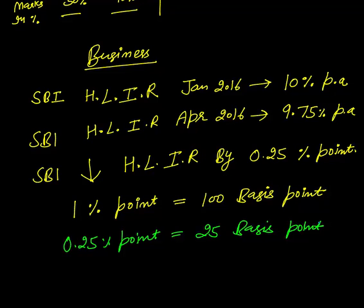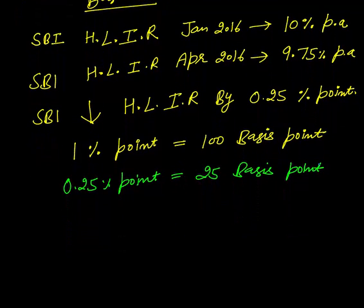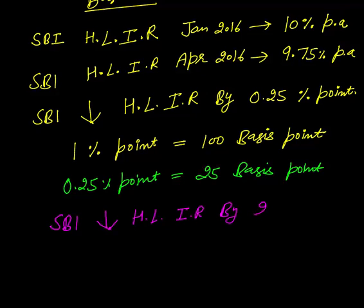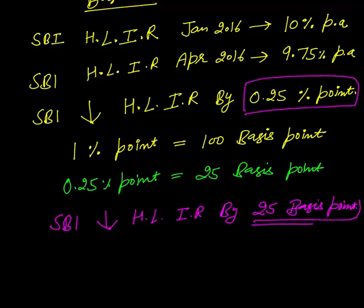In the Indian newspaper it will be written like this: State Bank of India reduces home loan interest rate by 25 basis points. And 0.25 percentage point is the same thing. Because the simple relation is that one percentage point is 100 basis points, so any percentage point you want to convert into basis point, you need to multiply by 100.